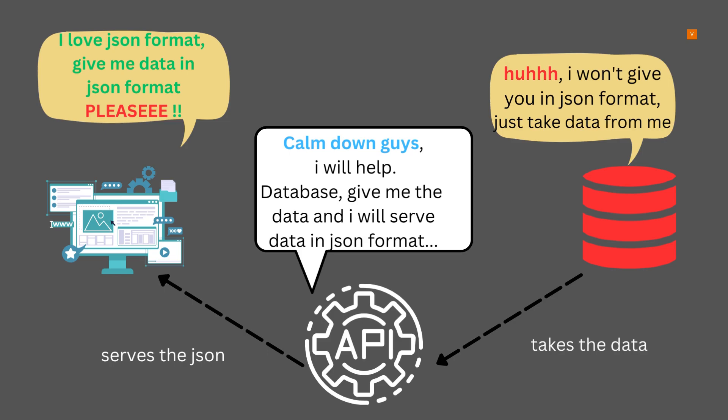There are two pieces of software: the front end is one piece of software and the database is another. The data related to videos — number of likes, number of comments, everything — is stored inside the database, but the front end needs this data. So how will data from the database go to the front end? This happens with the help of an API. The API sits in the middle of these two pieces of software, takes the data from the database, and serves it in JSON format.